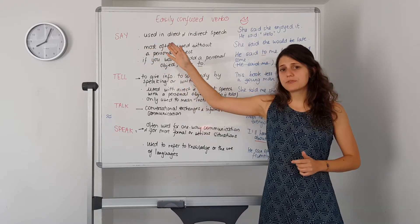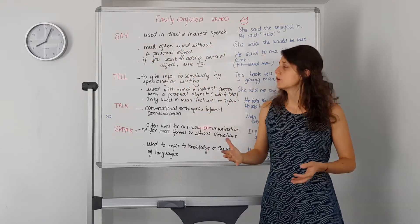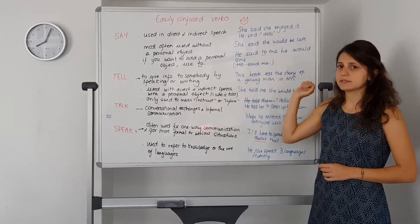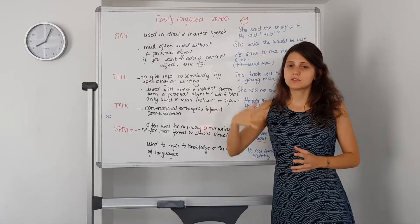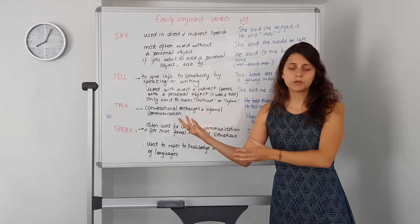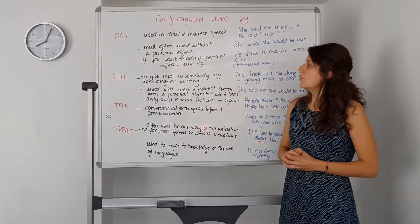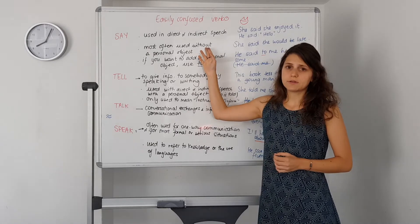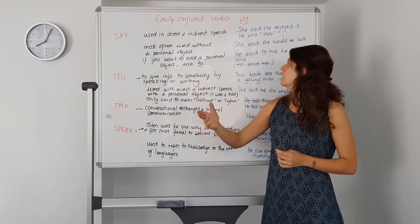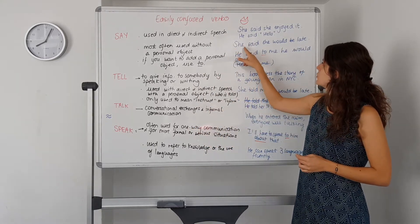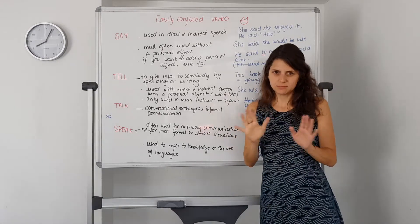First, say. We use say both in direct or indirect speech to report someone's words. For example, she said she enjoyed it, or he said hello. So when someone said something and you report those words, you use the word say. Most often we don't use it with a personal object — the person you speak to. You don't mention them. As in: she said she would be late. We wouldn't say she said me — that's incorrect.